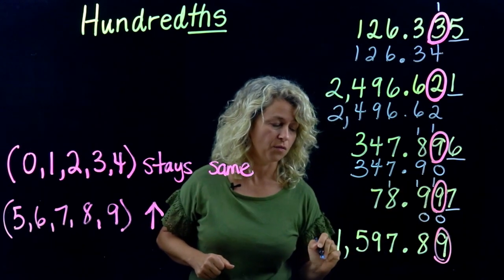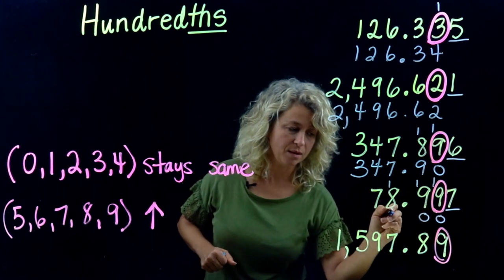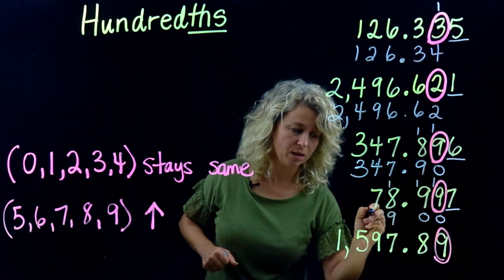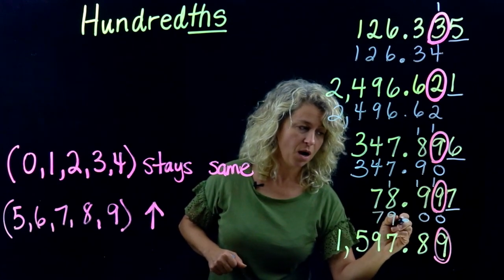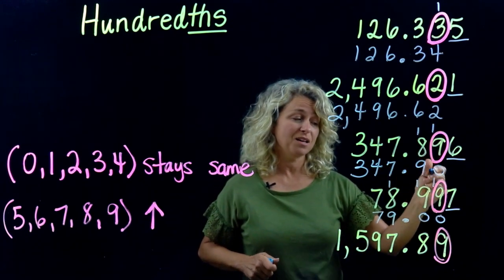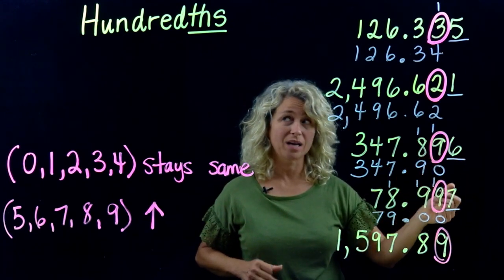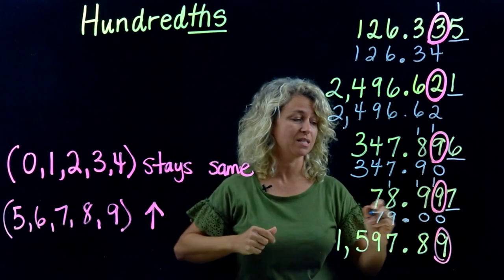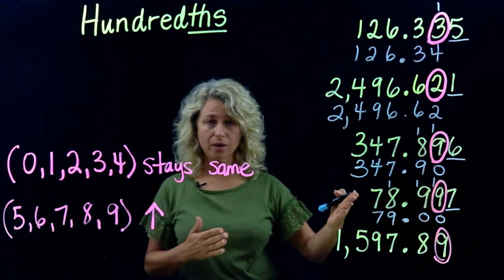Eight plus one is nine, and then bring down your seven. Don't forget the decimal. So seventy-eight and nine hundred ninety-seven thousandths rounded to the hundredths place is just 79.